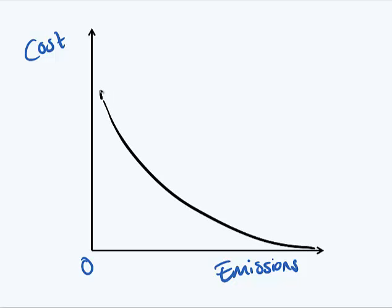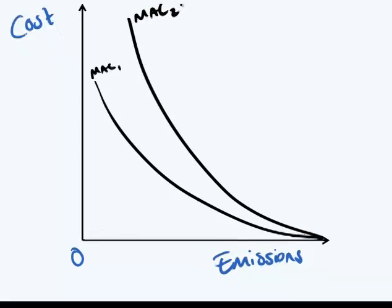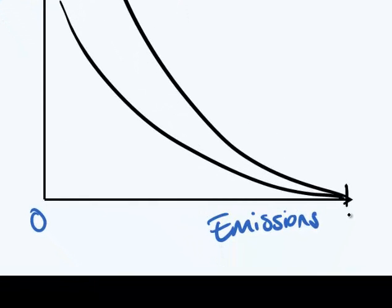Now there might be a company with very low marginal abatement cost because they have very good technology. It's quite cheap for them to reduce pollution from the maximum amount towards zero. On the other hand, we can also have a company that has a higher marginal abatement cost. They might have older technology and it's more expensive for them to reduce emissions from the maximum amount towards zero.